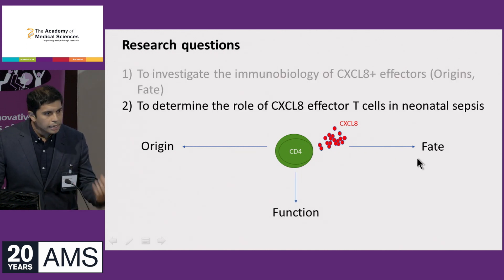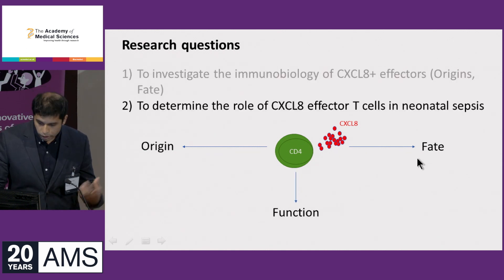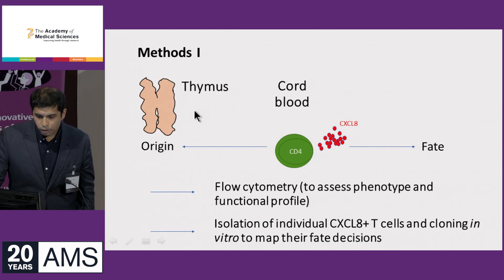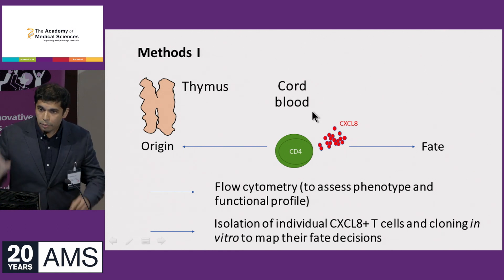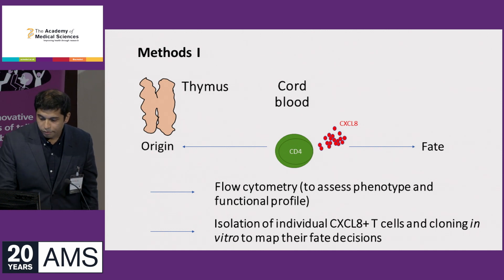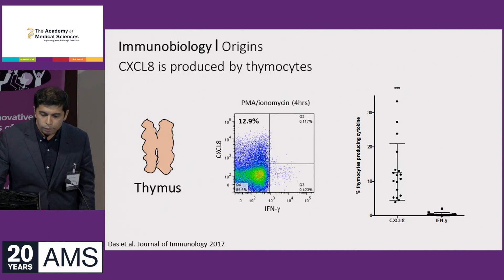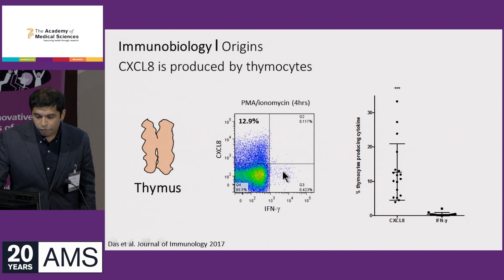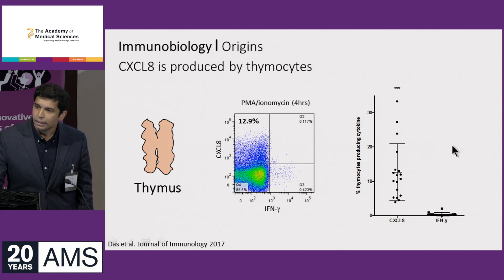Secondly, we can start to tease apart their function in the context of bacterial infection. In terms of methodology, we obtained thymus samples and cord blood samples, isolated thymocytes and cord blood T-cells, activated them, and looked at their functional profiles via flow cytometry. If you take a thymus and activate the thymocytes, you can see that a proportion of them produce CXCL8 but not very much interferon-gamma. The message here is that CXCL8 is produced very early on in T-cell development, within the thymus.